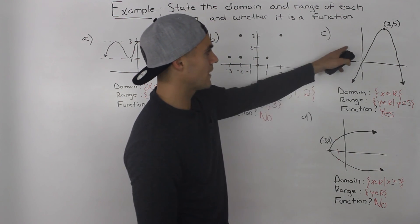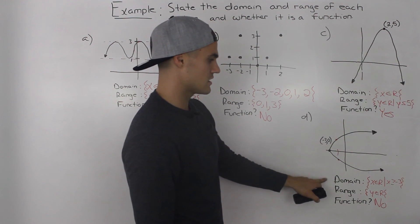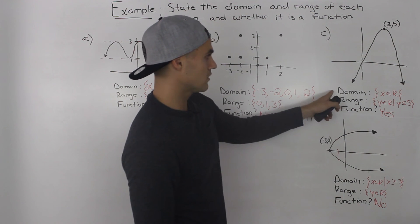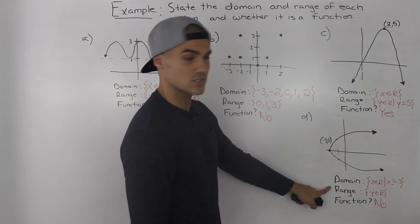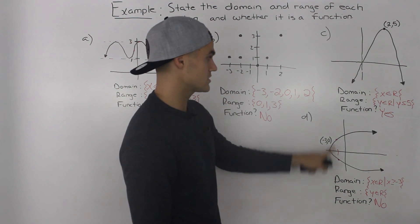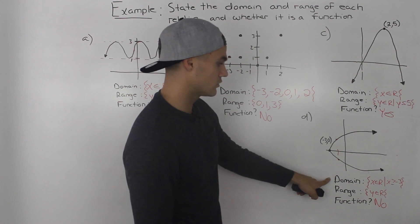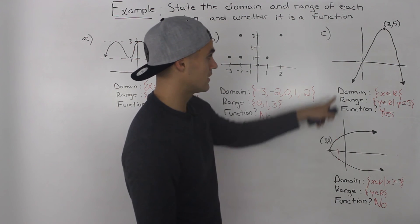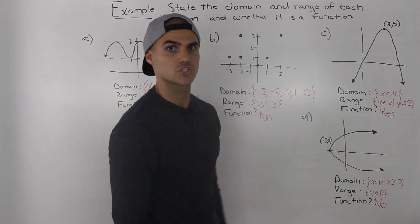So comparing a regular parabola and a sideways parabola, the properties are sort of flipped. For the regular parabola, there are no restrictions on the domain but there is a restriction on the range, and it is a function. For the sideways parabola, there's no restriction on the range but there is on the domain, and it is not a function.